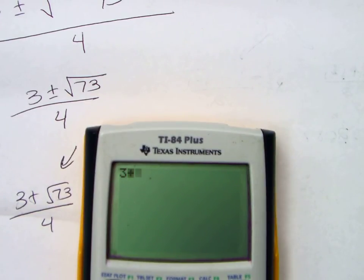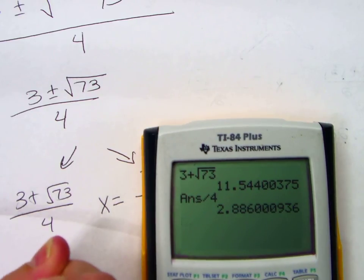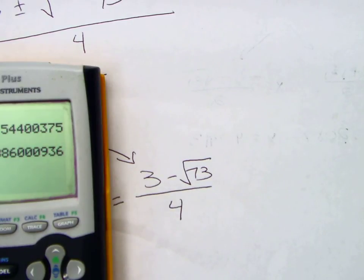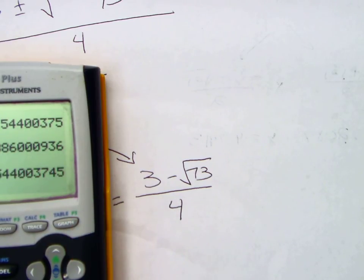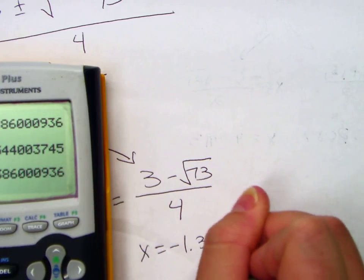I like 4 decimal points for radicals. It's more accurate. 3 plus the square root of 73. Enter. Divided by 4. 2.8860. 2.8860. And then same thing. 3 minus radical 73. Divided by 4. X equals negative 1.3860.